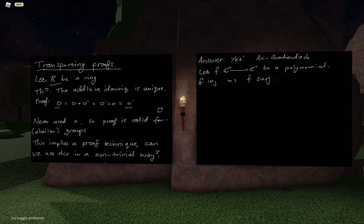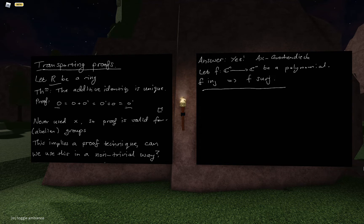Essentially, if we had a disproof of this theorem, we would be able to take a proof in the sense of natural deduction of the negation of the statement and transport it into the first-order theory of algebraically closed fields of non-zero characteristic and arrive at a contradiction. So it's time to start getting formal. The first thing I need to do is introduce the first-order theories we're going to be interested in: the first-order theory of fields, extended to the first-order theory of algebraically closed fields by adding extra axioms.